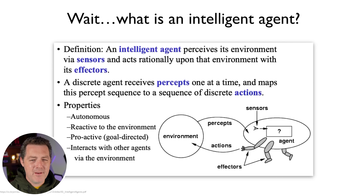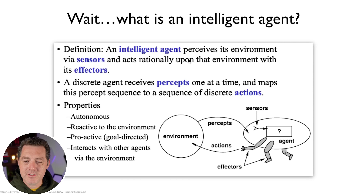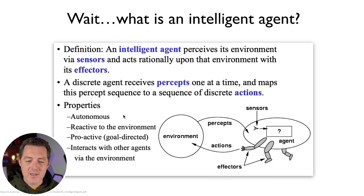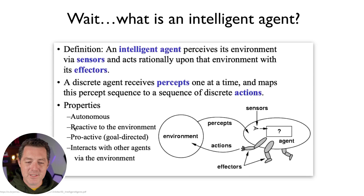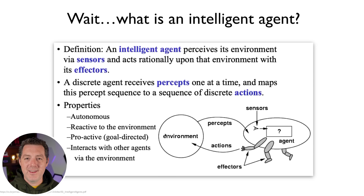The presentation defines what an intelligent agent is: an intelligent agent perceives its environment via sensors and acts rationally upon that environment with its effectors. A discrete agent receives percepts one at a time and maps this percept sequence to a sequence of discrete actions. The properties of an intelligent agent are that it's autonomous, reactive to the environment, proactive, goal-directed, and interacts with other agents via the environment — very similar to frameworks like CrewAI and AutoGen.